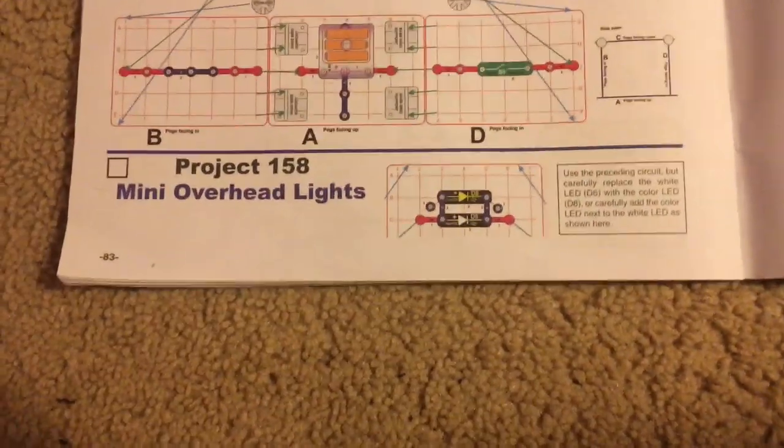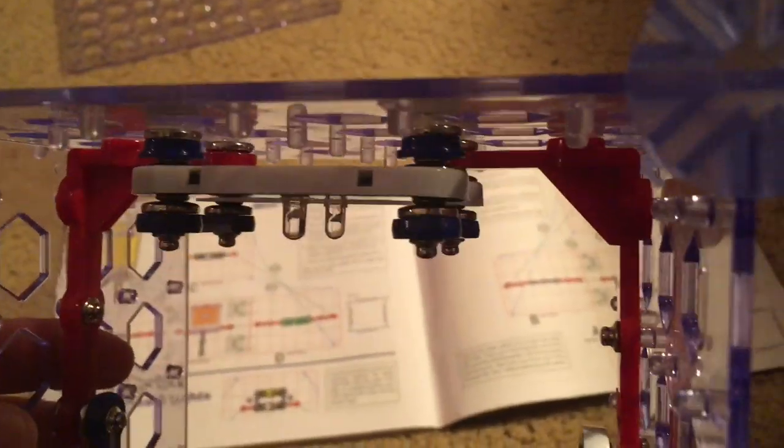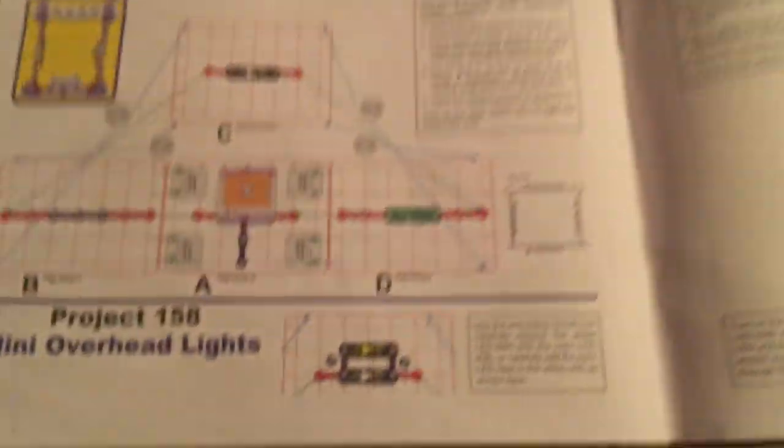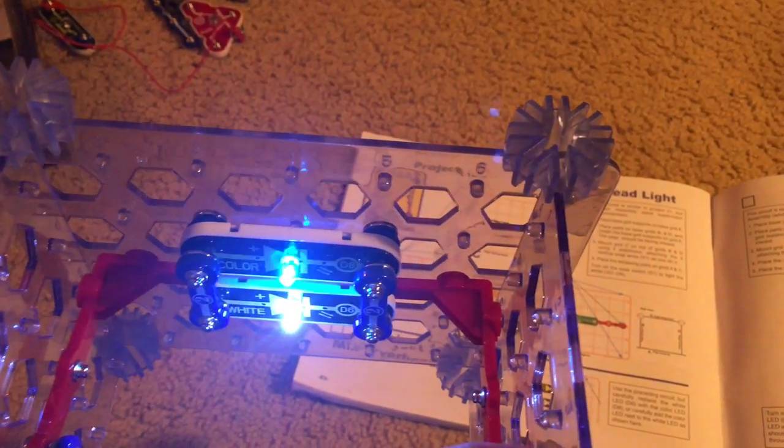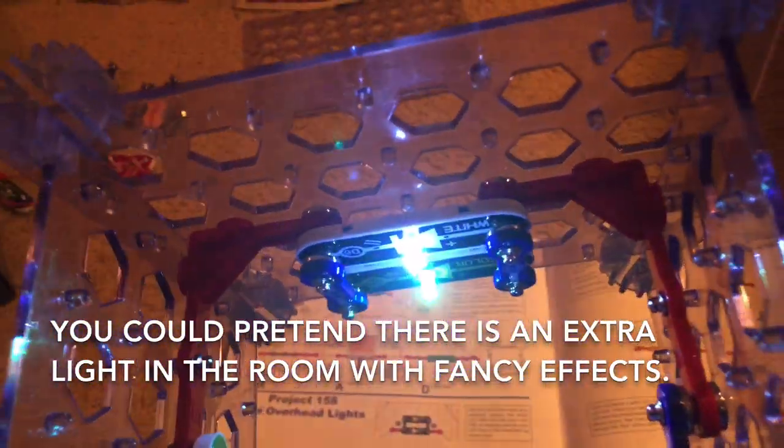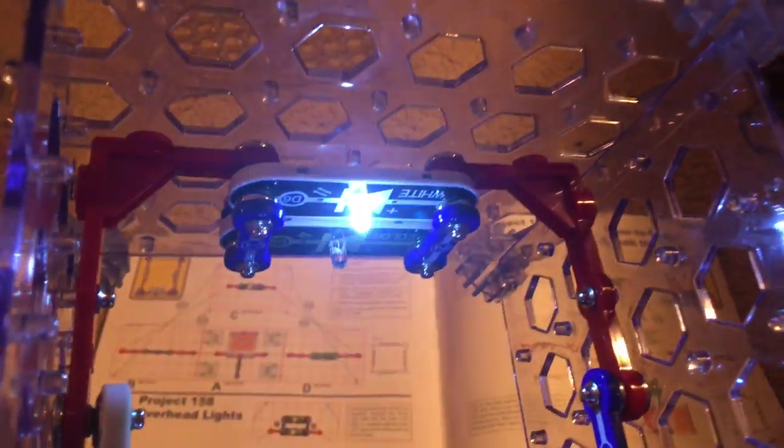Project 158, mini overhead lights. Using the preceding circuit, we're going to carefully insert the color LED parallel to the white LED in an inverted position. We'll use double snap wires to connect it and single snap wires to support it. Then we'll turn on the slide switch and now we'll have two lights that come on. The white LED is on continuously but the color LED blinks. You could pretend that you have an extra overhead light in this room, one that flashes to make the atmosphere more fancy.